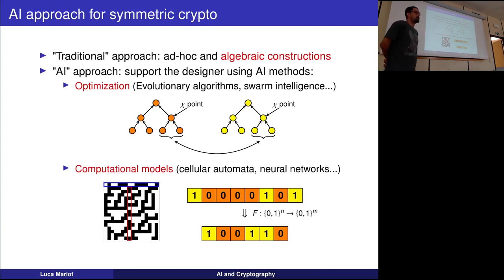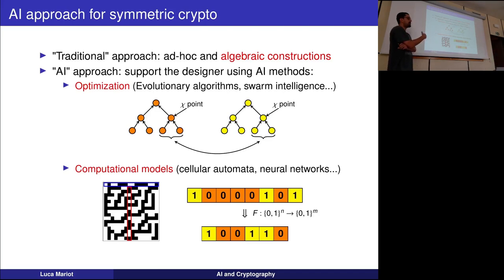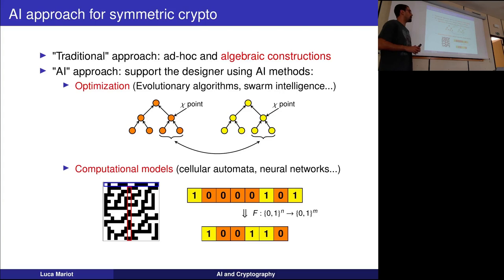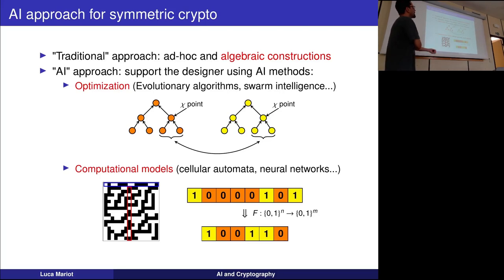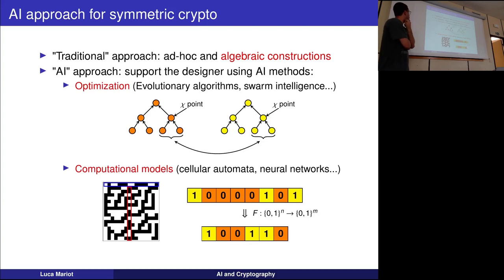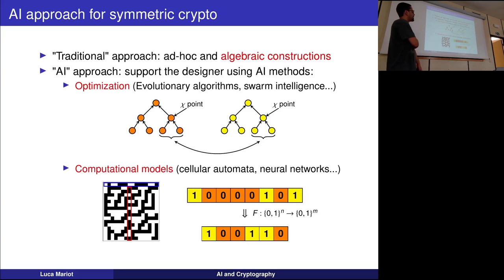On the other hand, the approach given to us by artificial intelligence is to support the cipher designer by generating different primitives through AI with good properties. The cryptographer can then select the best one with respect to both security and implementation properties. This has been done mostly using optimization algorithms such as evolutionary algorithms, swarm intelligence, or computational models such as cellular automata. Neural networks were tried but were not very successful for design.